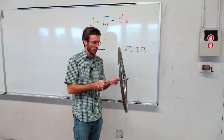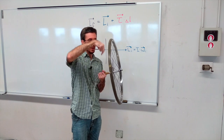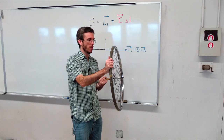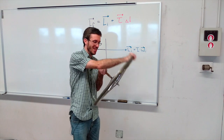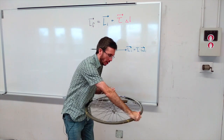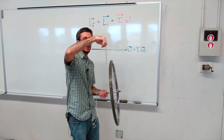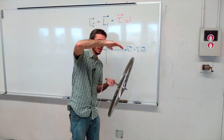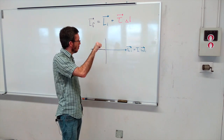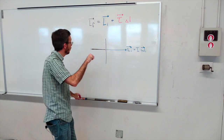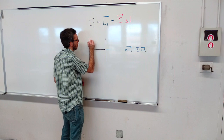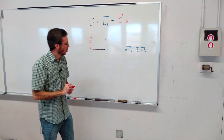The moment I let go, my bike wheel is hinged here, so gravity pulls down on the far end. What torque does gravity cause? Gravity tries to turn the wheel downward — like this. Using the right-hand rule for that rotation, the torque vector points backward. So in the top view, my torque vector points in this direction.